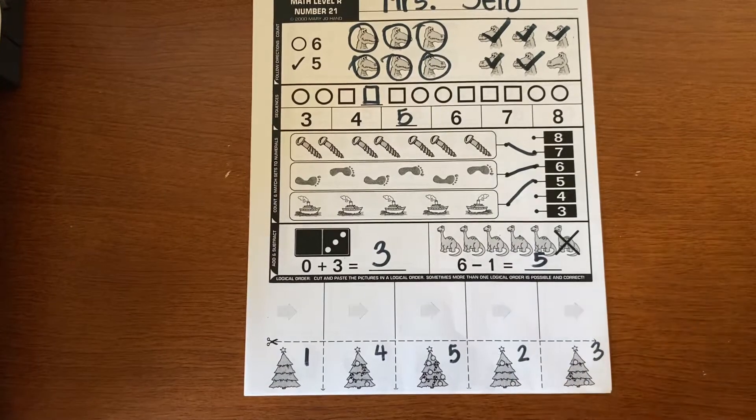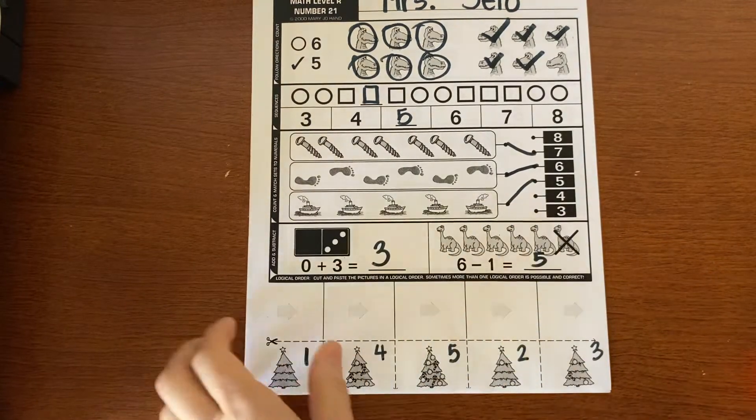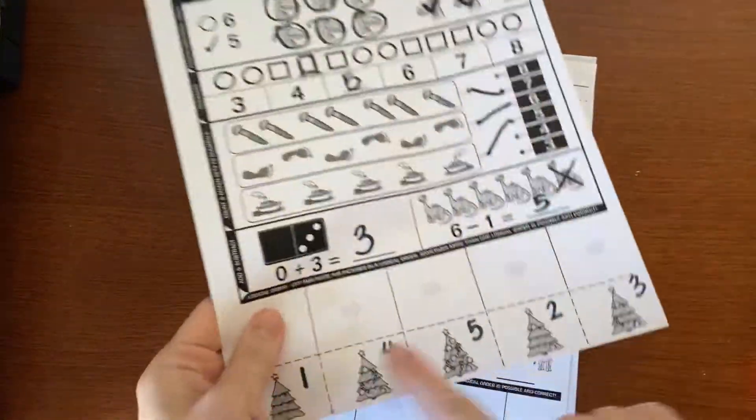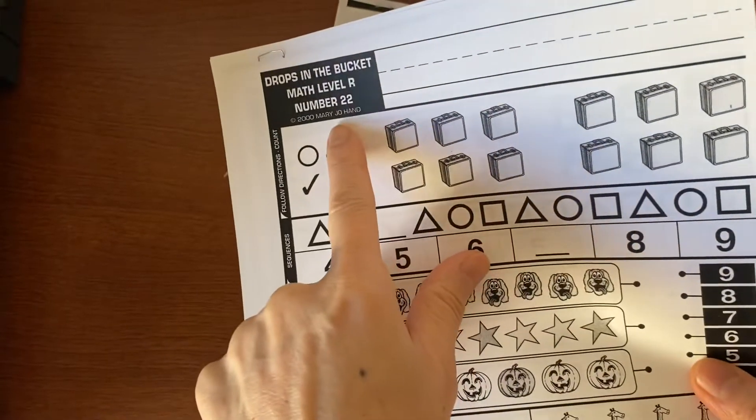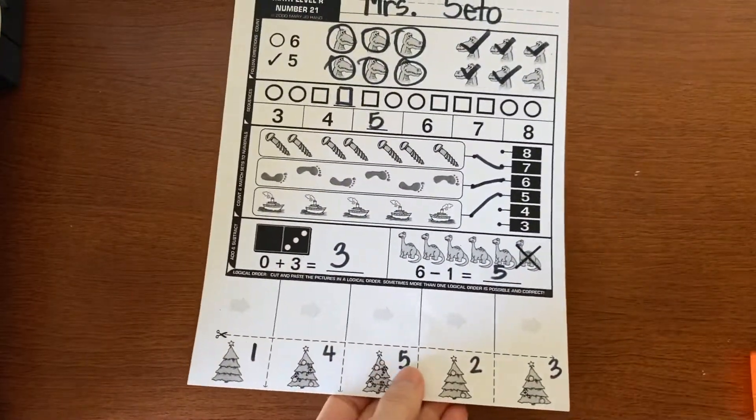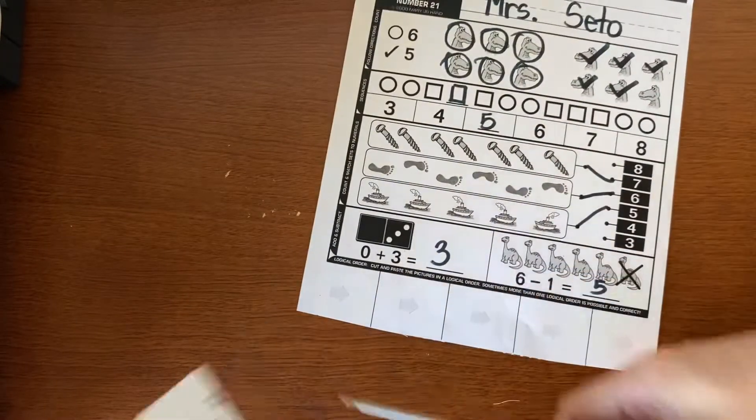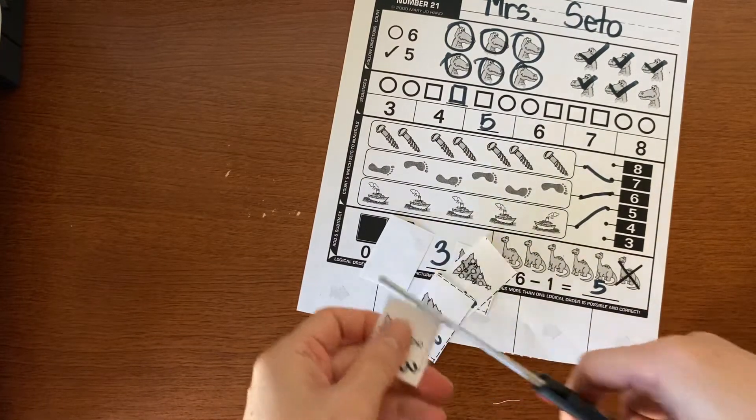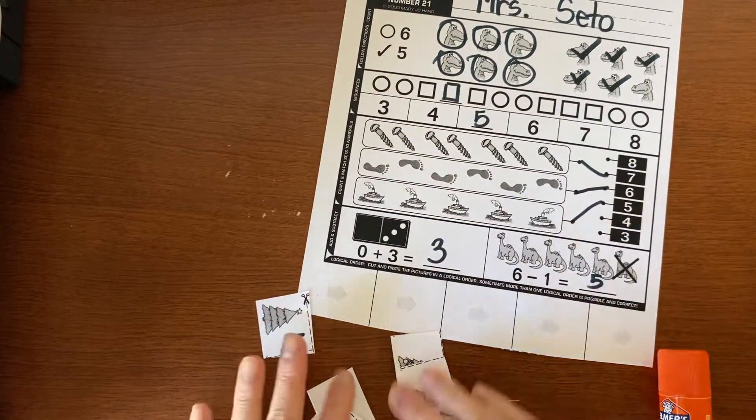So now we need to go get our glue stick and our scissors. And I'm going to pull the page off so that when I cut it off, cut the bottom, I don't accidentally cut the other page. I'm saving 22 for next week. And so let's start cutting them out. I'm going to cut out the Christmas tree. Then I'm going to cut all the little pieces.